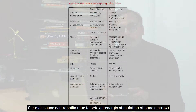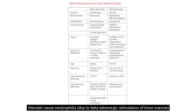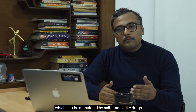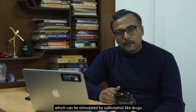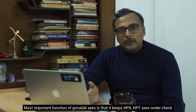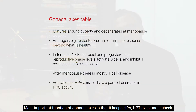For example, when we give steroids to a patient there is increased neutrophilia. We give steroids to patients who have asthma so that there are more beta adrenergic receptors which respond to the beta-2 adrenergic stimulation from salbutamol and other drugs.